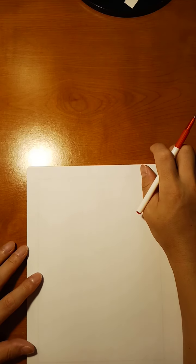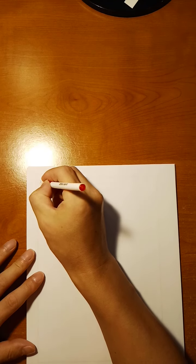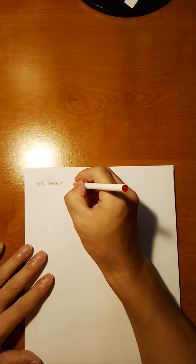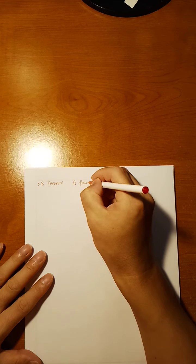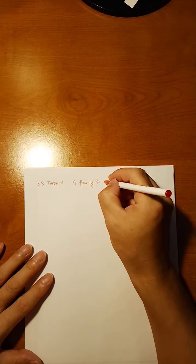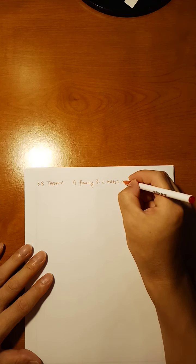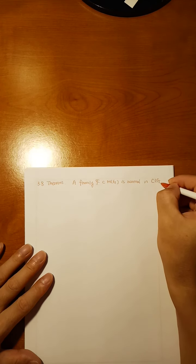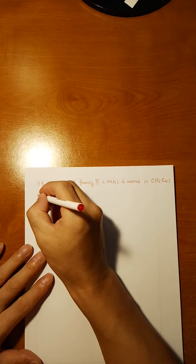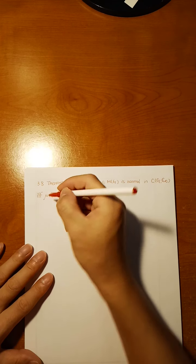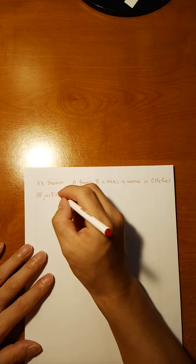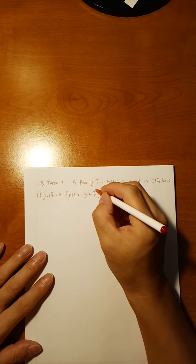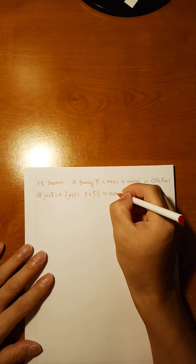Let's prove Theorem 3.8. Theorem 3.8 states: a family F in M(G) is normal in C(G, C∞) if and only if μ(F), which is the collection of μ(f) for f belonging to the family F, is locally bounded.